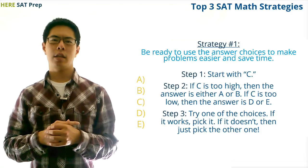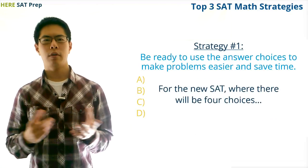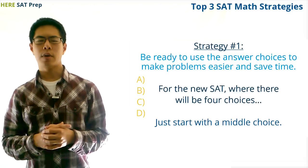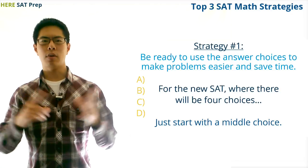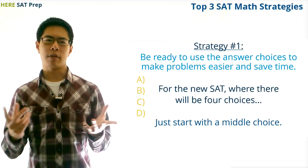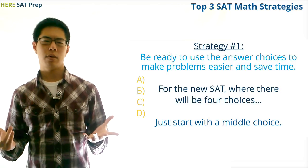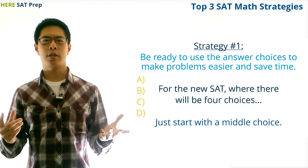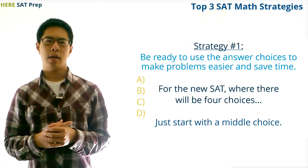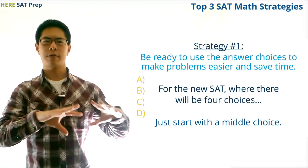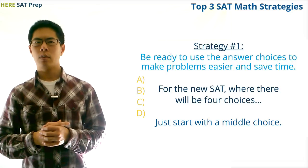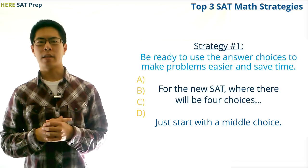However, this strategy will apply a little bit differently for the new SAT math test, which will only have four choices for each question. In this situation, it would be a better idea to start with a choice in the middle rather than the first choice, because if this middle choice ends up being too high or too low, then you can immediately eliminate one or even both of the remaining answer choices and solve the question quicker. For example, if you pick choice B to start with, and you find that it's too high, then you already know the answer has to be A, because C and D are also going to be too high. Using this strategy of not only starting with the answer choices for some questions, but also starting with the middle choices and eliminating other choices based on what you get with this middle choice will help you save time and work through the SAT math test more efficiently.